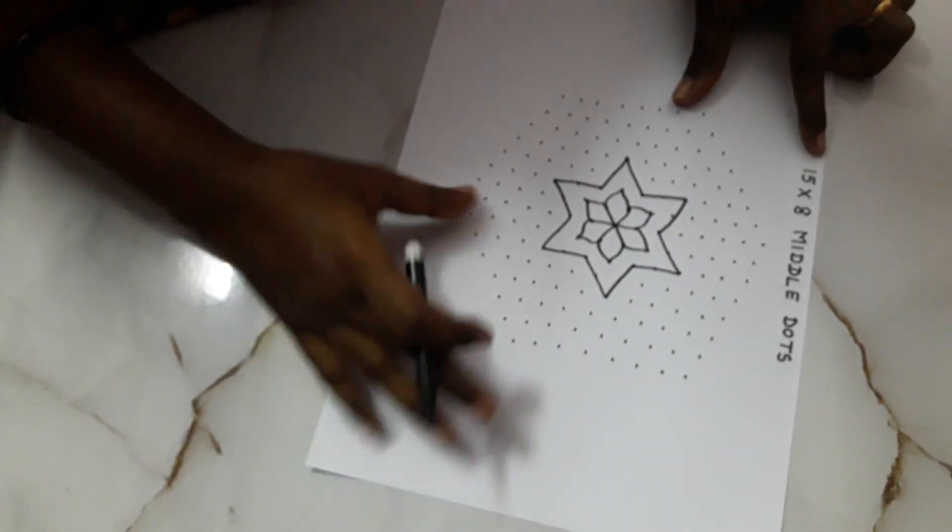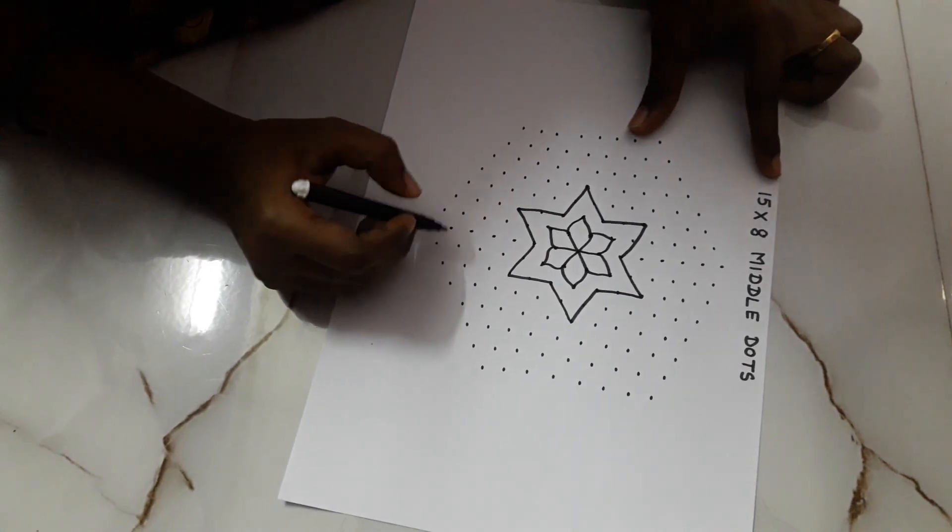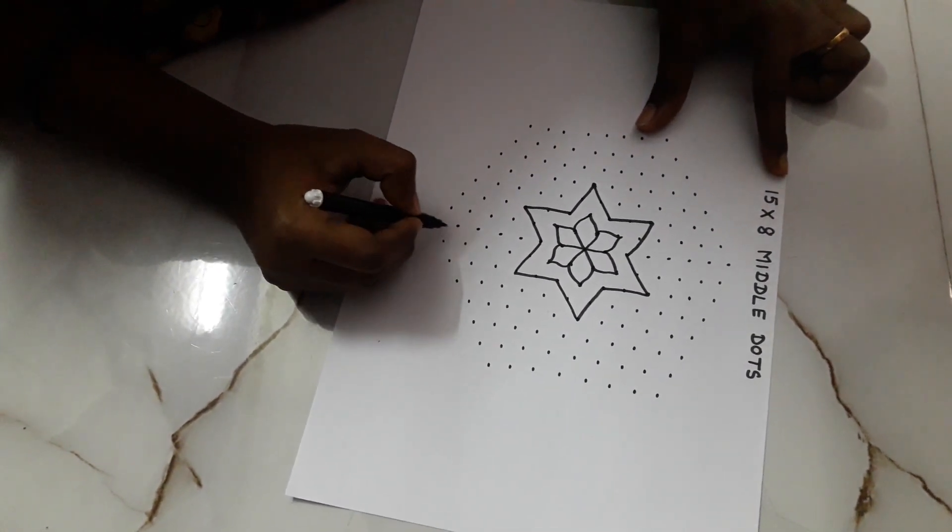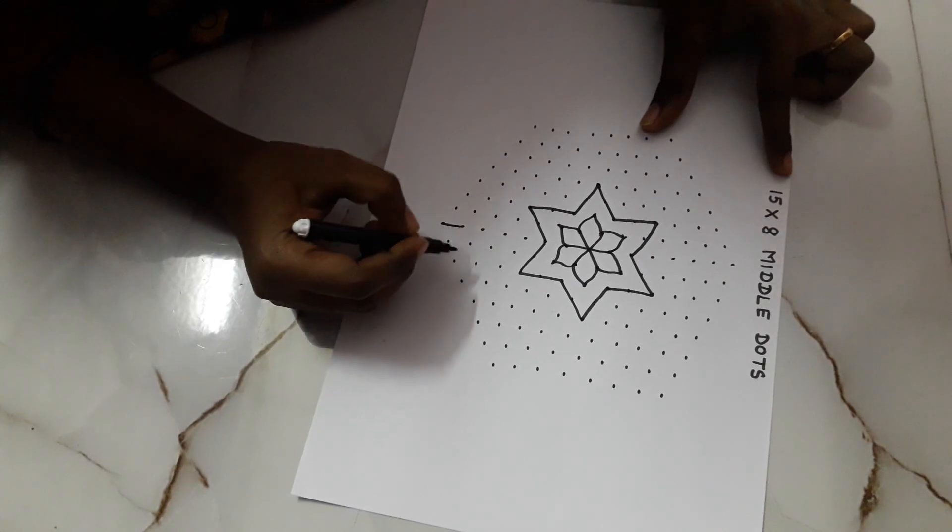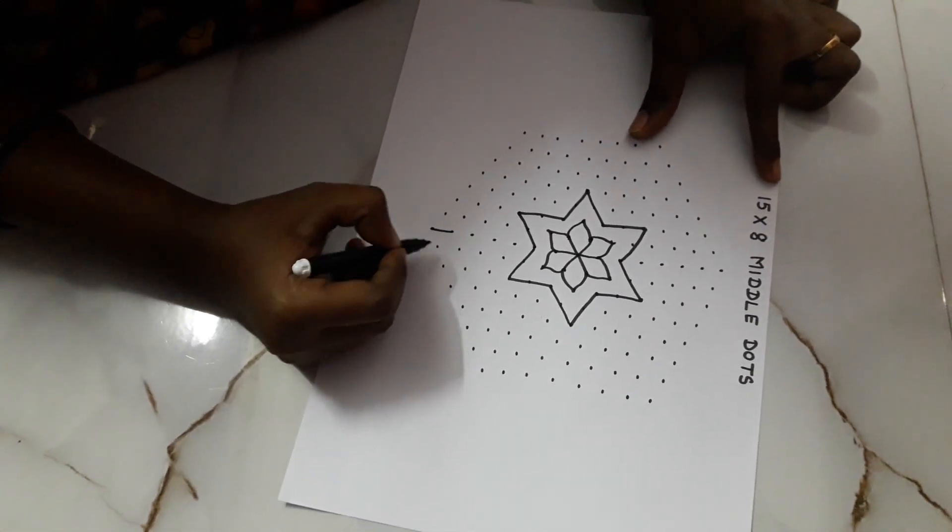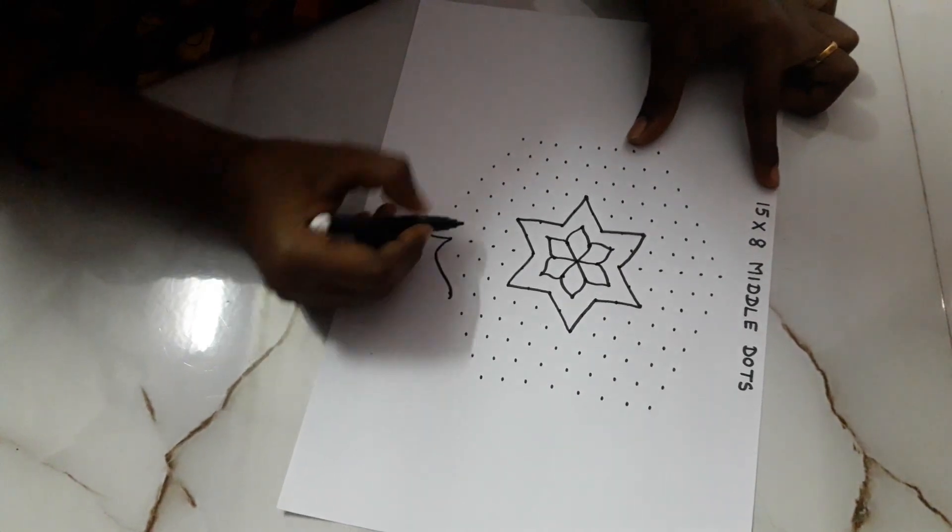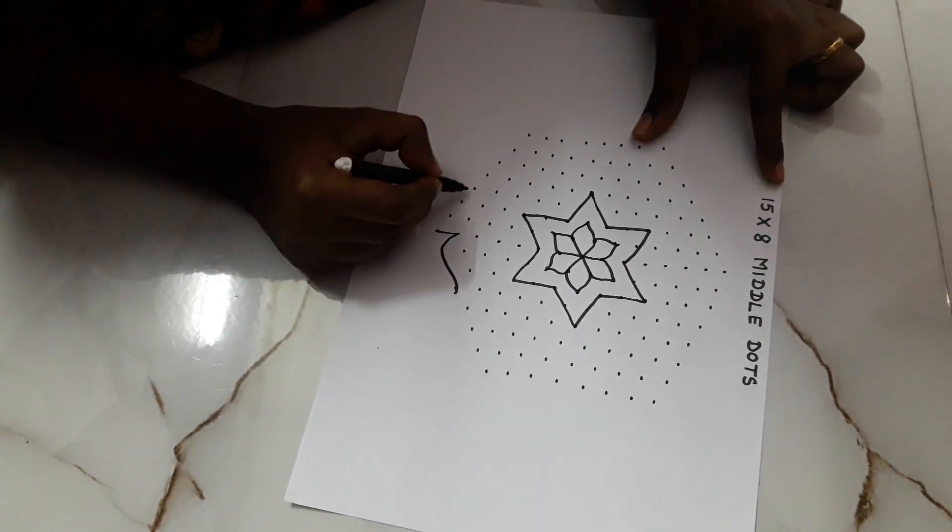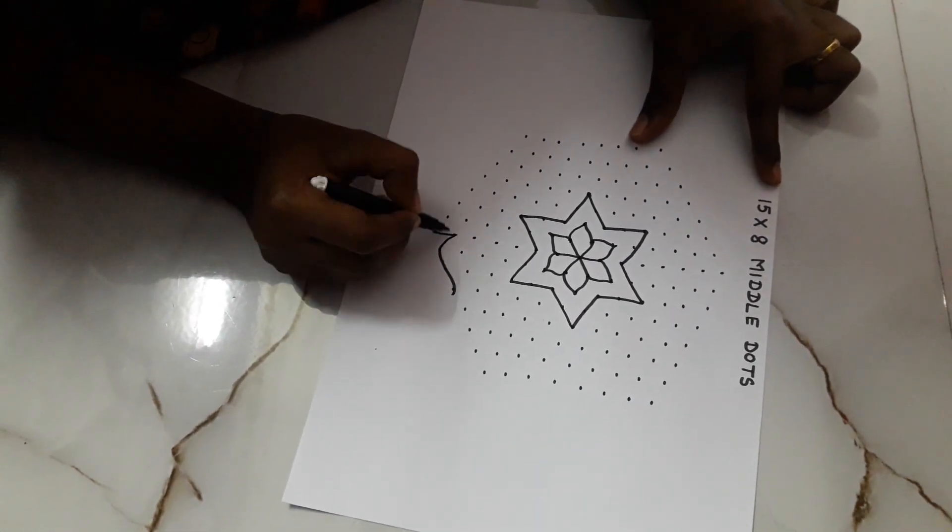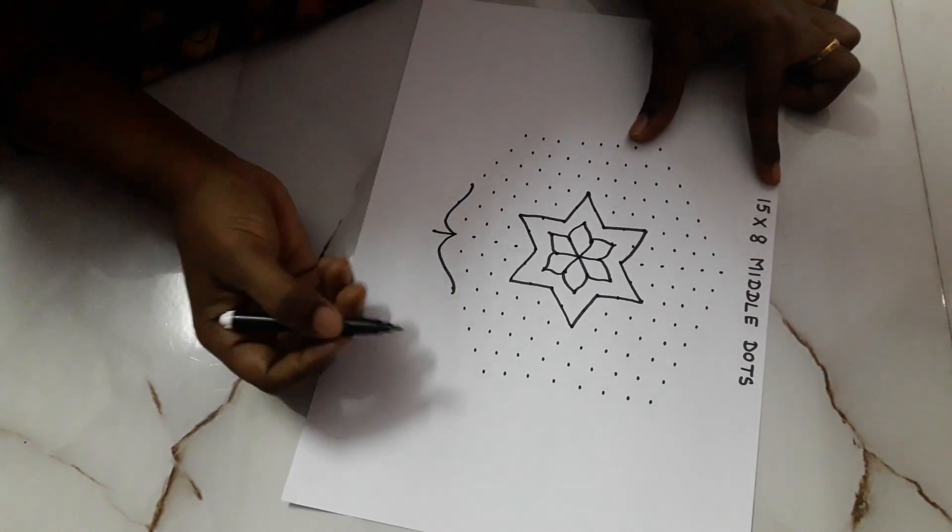Then, you have to come down. From here, you have to put like this. Then, you have to draw the leaf. From three dots. For three dots, you have to draw like this.